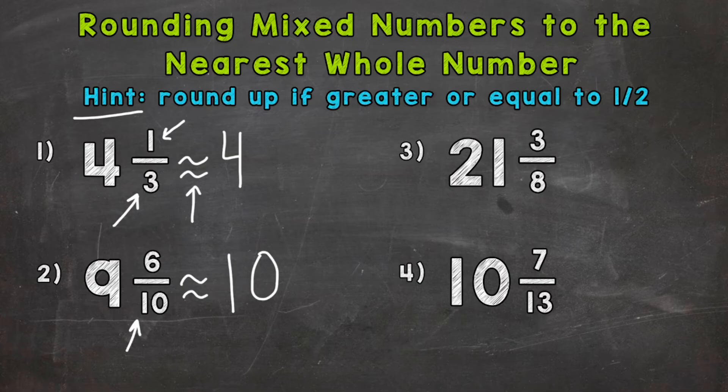Number three, we have 21 and three eighths. So the fractional part, we have three eighths. So we know that four eighths is half or four out of eight. So we have three eighths. That's less than half. So we stay the same. And our closest whole number is 21.